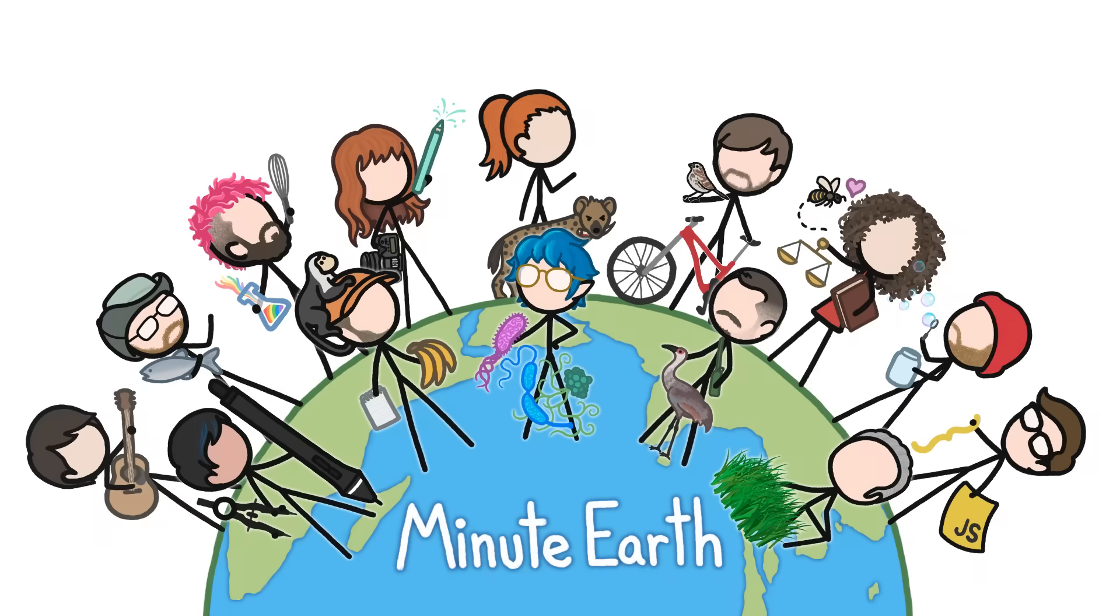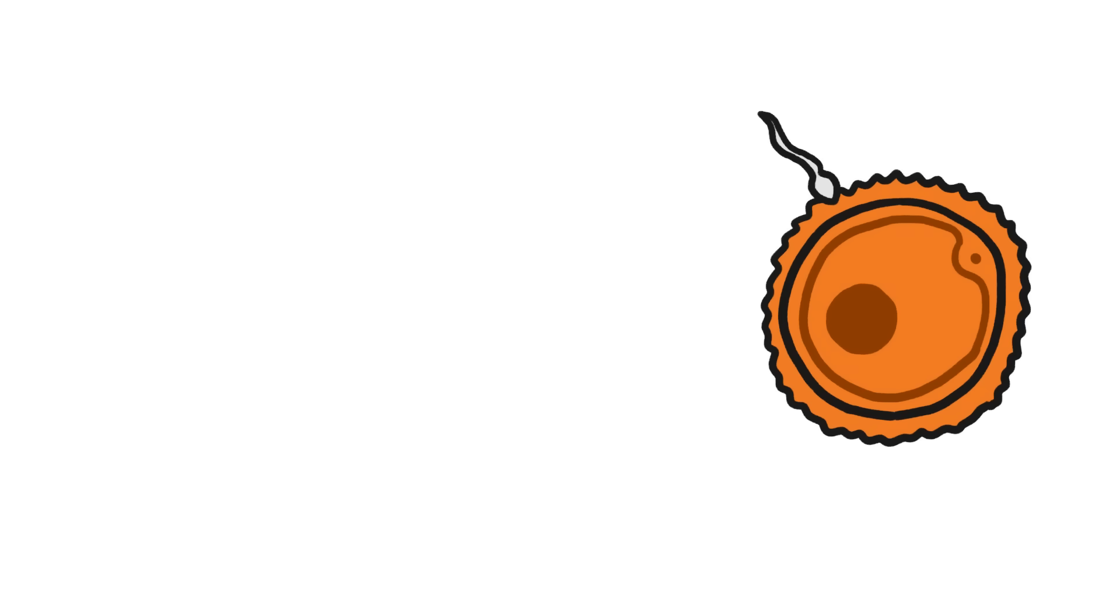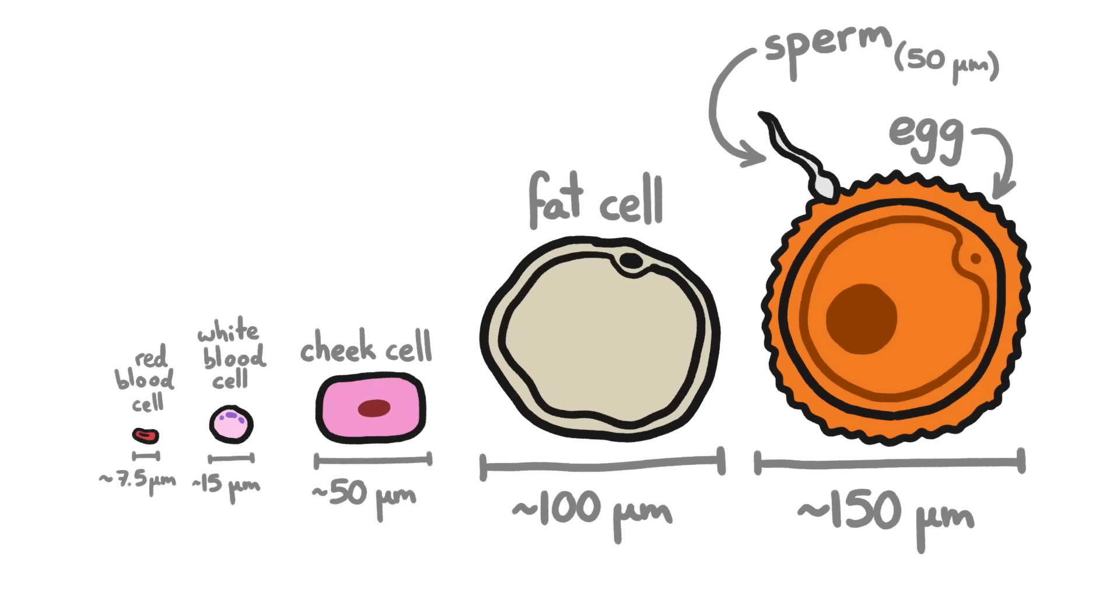Welcome to MinuteEarth. An egg — the cell that's sperm fertilized to produce a baby — is generally the largest cell that an organism produces. Which makes sense.